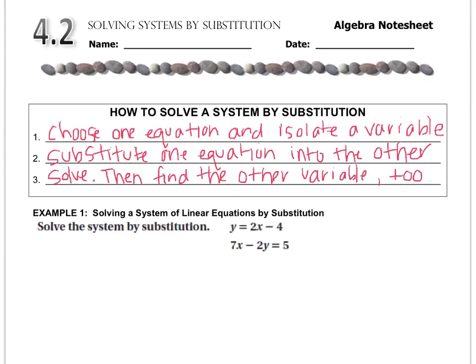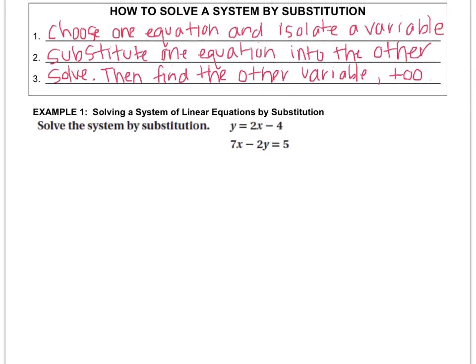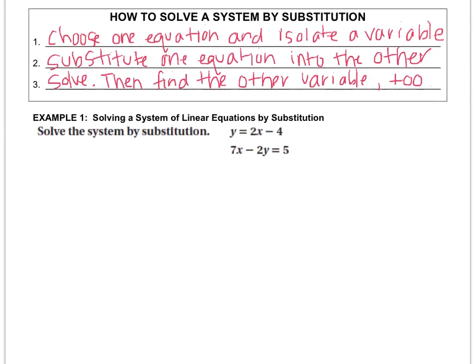So here's what that looks like. In example one, we have to solve by substitution, and what you'll notice is that the first step, where it says choose one equation and isolate a variable, already has been done for us. So this is like a beginner level substitution, where if you look at this equation right here, y equals 2x minus 4, the variable is already by itself.